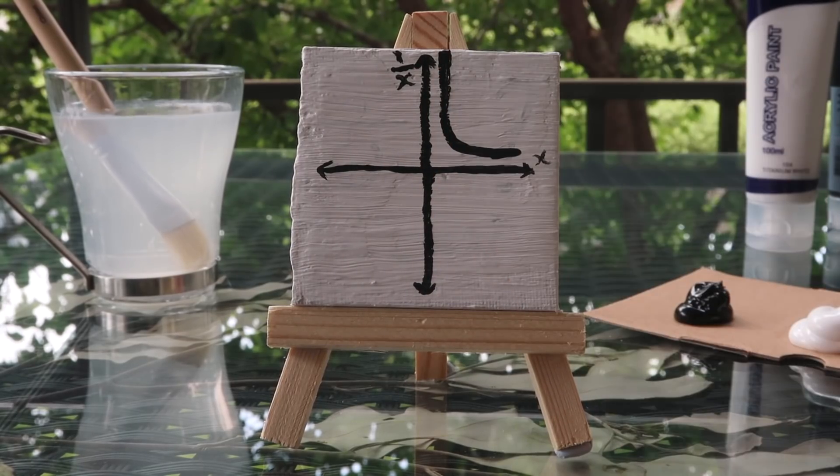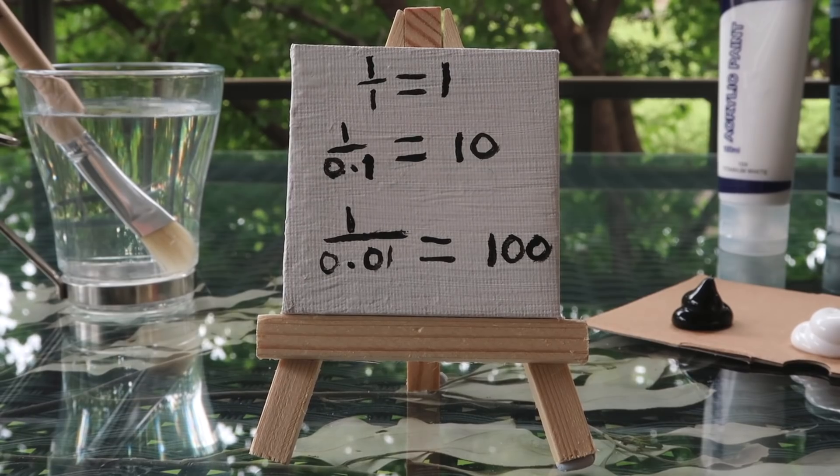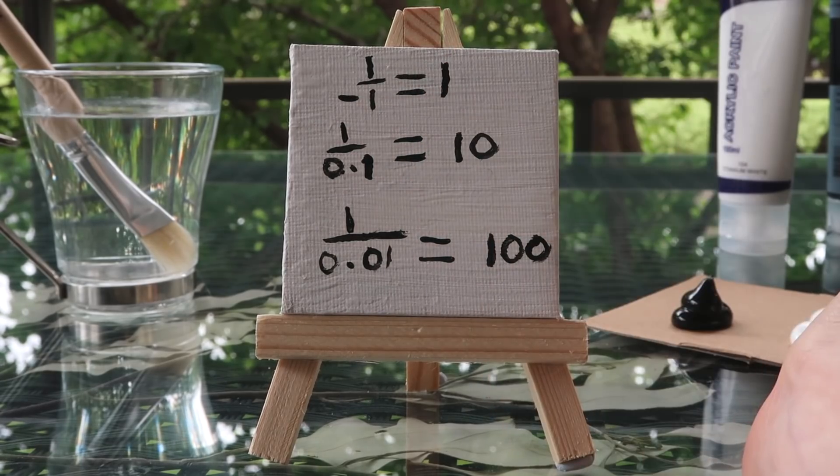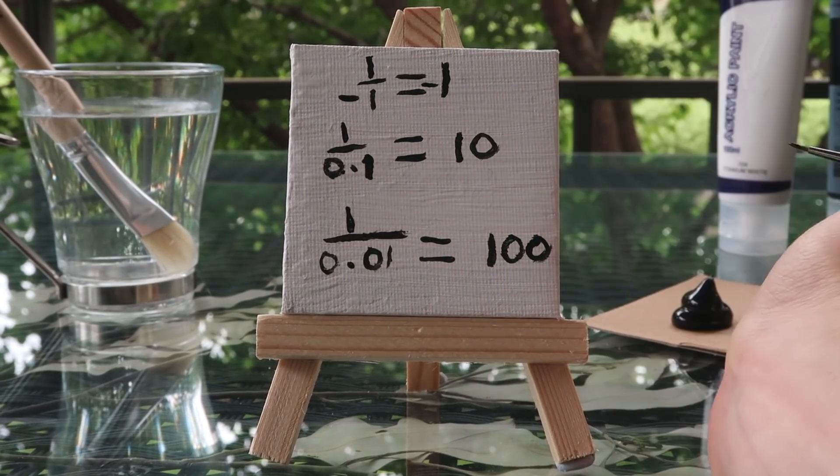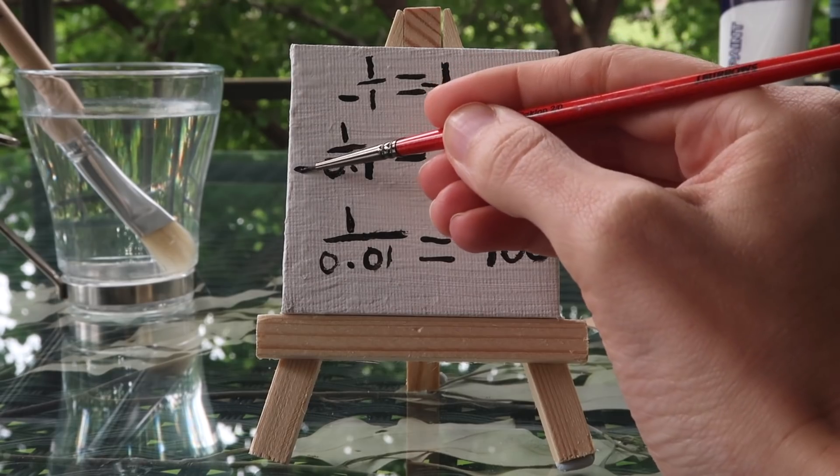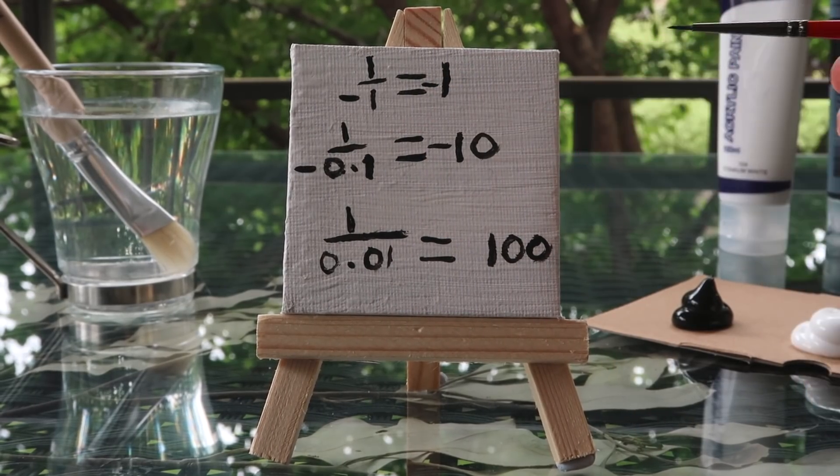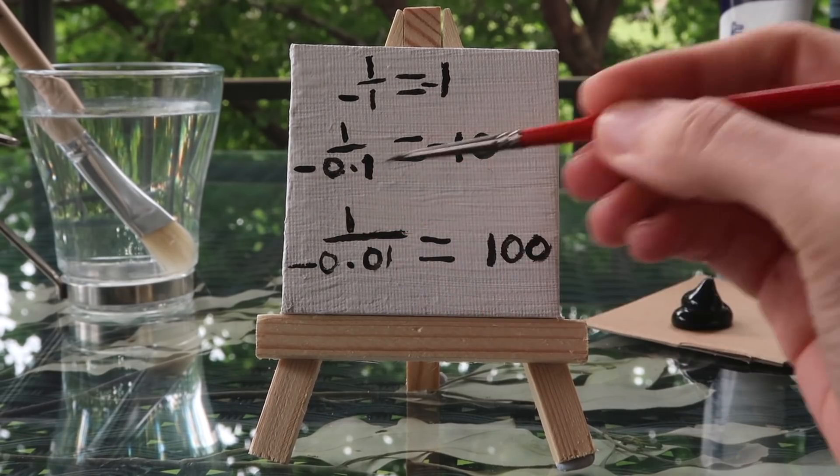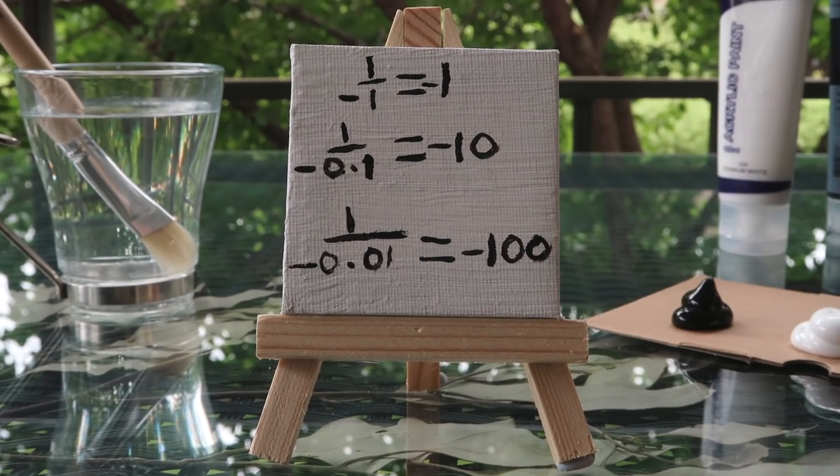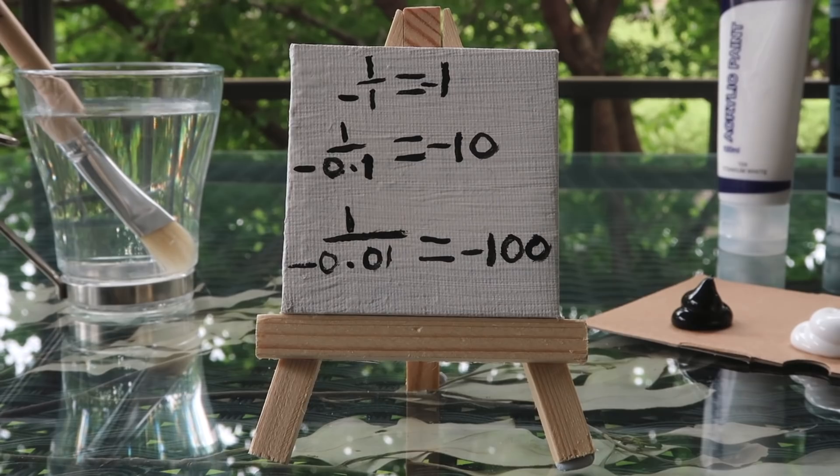Let's try it again but starting somewhere else. 1 divided by negative 1 is negative 1. 1 divided by negative 0.1 is negative 10. 1 divided by negative 0.01 is negative 100.